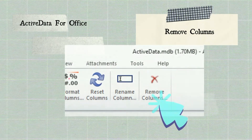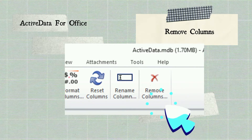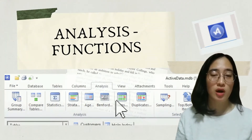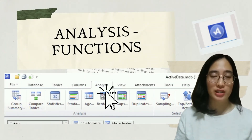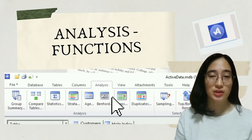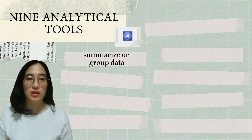If you wish to delete the original employee name column, just click Columns, then Remove Columns, and select the Employee Name field to delete. The next and most complex group of functions is located in the Analysis section, next to the Columns section. This group contains nine analytical tools.